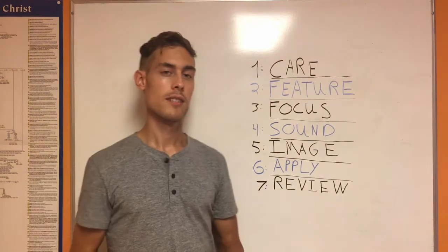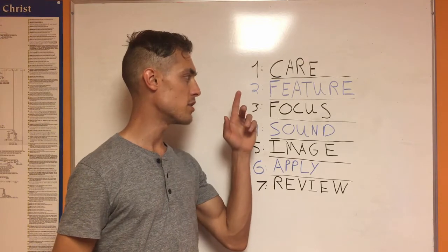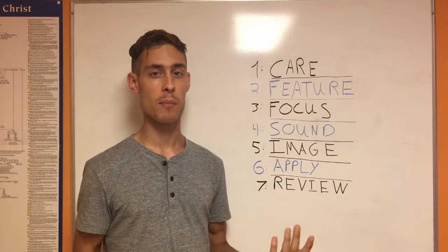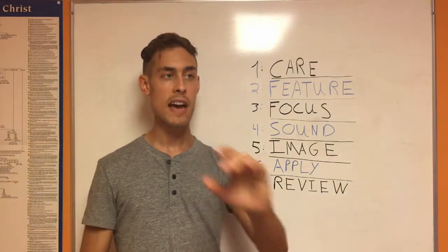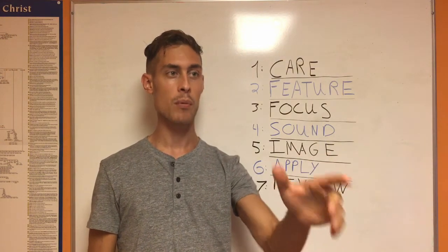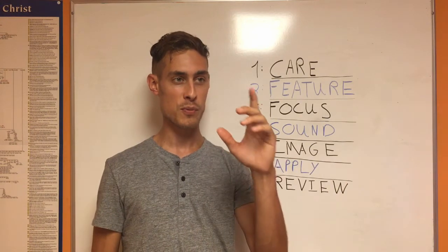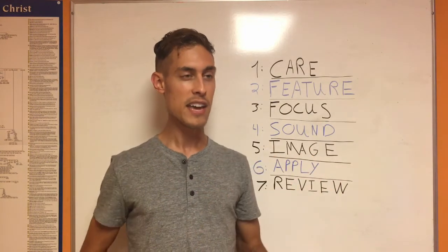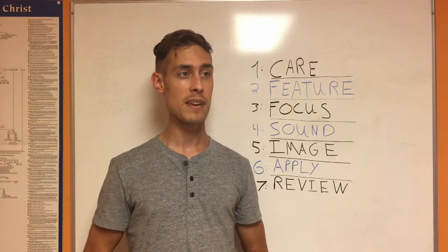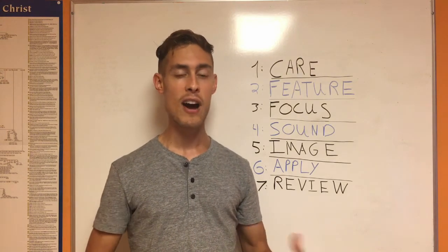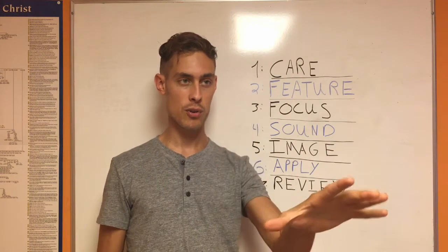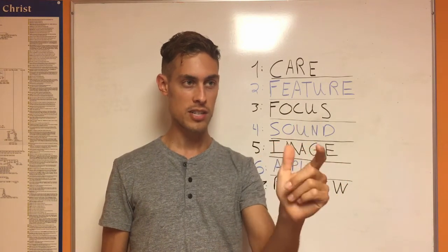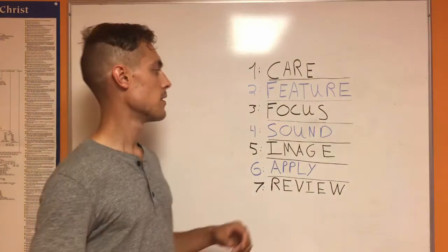Step number two is feature. Imagine you're at a social gathering — could be church, a party, anything. Pick out somebody across the room that you want to meet. Before you go greet them, identify a facial feature or bodily feature about this person that really sticks out — maybe they're bald, maybe they have a large nose, maybe their eyes are really close together. From a distance, pick out that one distinguishing feature.